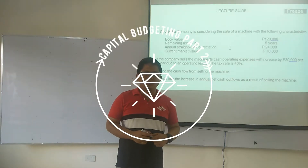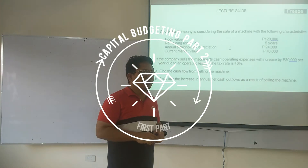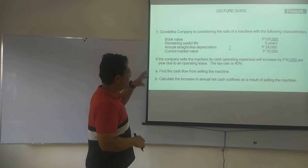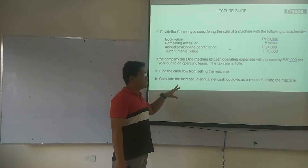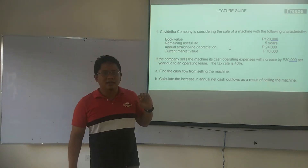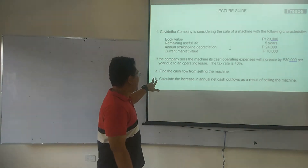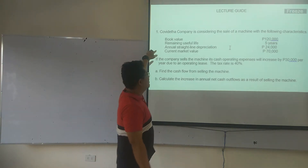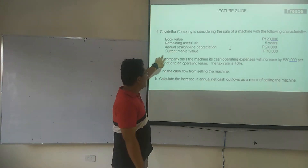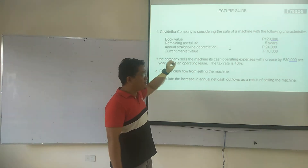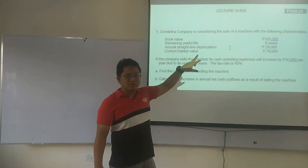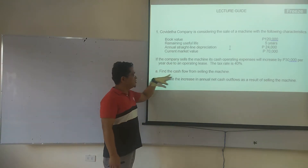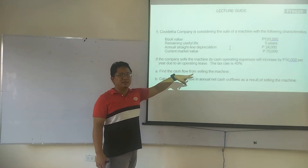Capital Budgeting Part 2, Lesson 1. The question is: find the cash flow from selling the machine. The book value is 120,000 and its current market value is 70,000. So if we are going to sell this, we will be receiving 70,000. The question is the total cash flow from selling the machine.